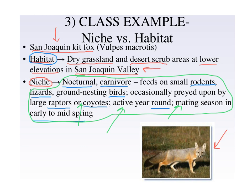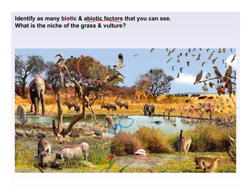Here's a little ecosystem — looks like an African ecosystem. Identify as many biotic and abiotic factors as you can see. For biotic factors: this bird, the tree, the elephant, the giraffe, these gazelles, the zebra, the grass — everything that's living is a biotic factor. Now for abiotic factors: water right here is very important — this gazelle is drinking the water. Sunlight and temperature are abiotic factors. The soil — whether it's good or bad soil — is an abiotic factor that affects all the living things in that community.